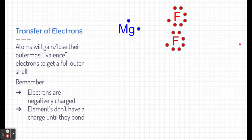Let's take a look at what we mean by transferring electrons. We learned this back in Chem 1, but let's take a closer look again. You might recall that atoms will gain or lose their outermost or valence electrons in order to gain a full outer shell. A couple things to remember about this.